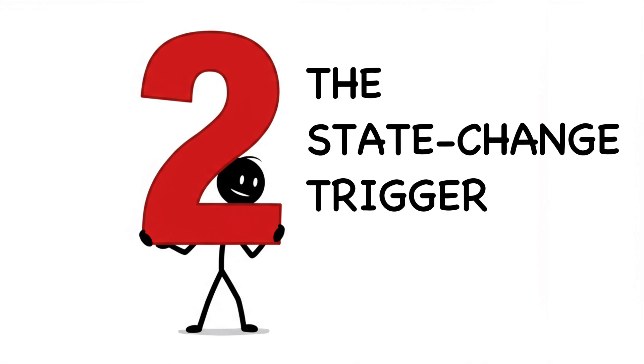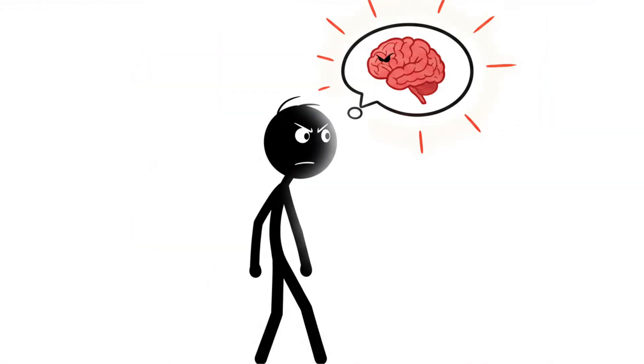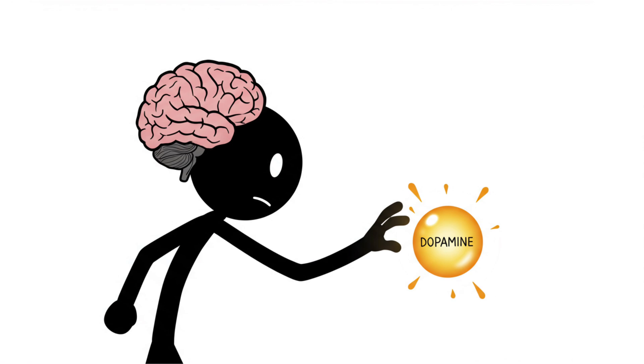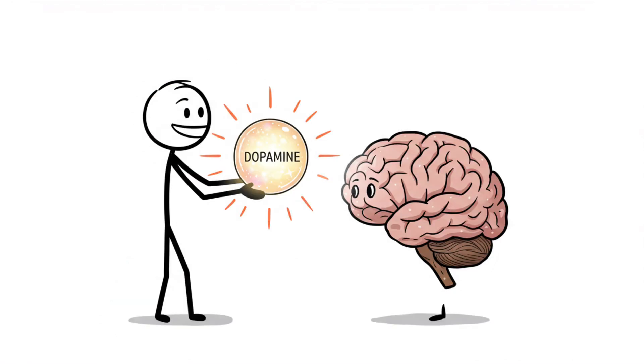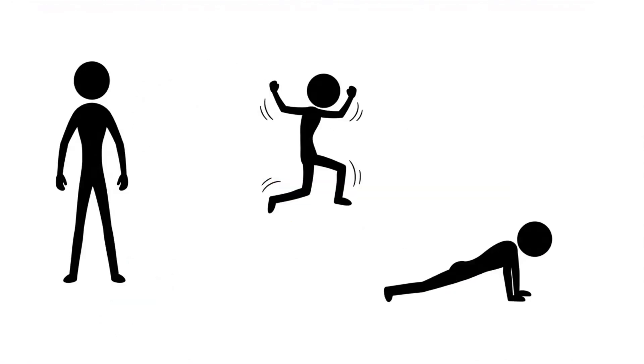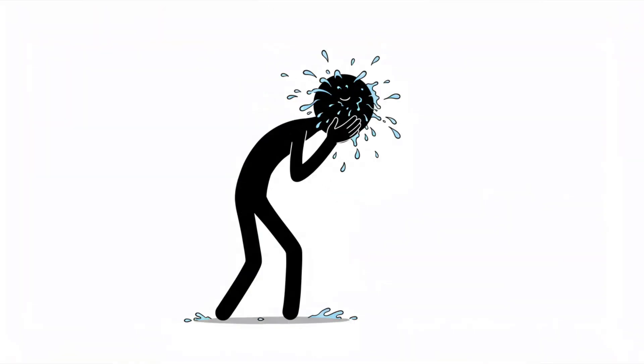Hack number two, the state change trigger. When you feel that urge to procrastinate, your brain's craving a quick dopamine hit. Give it one, on your terms. Stand up, do ten jumping jacks, drop for ten push-ups, splash cold water on your face.